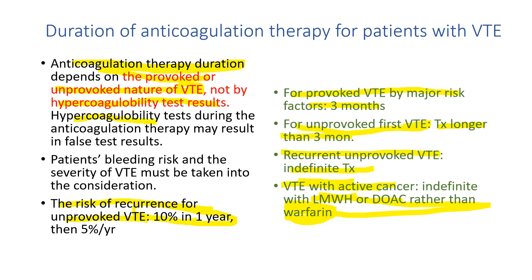Hypercoagulability tests during anticoagulation therapy may result in false test results. For example, warfarin inhibits protein C and S, so it can lower the level of protein C and S in patients who have no actual protein C or S deficiency.